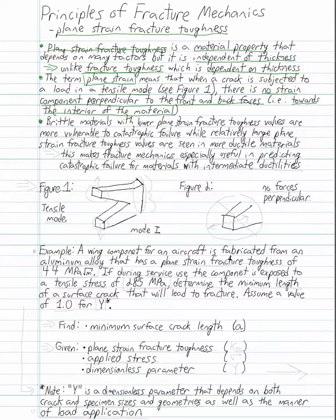Brittle materials with lower plane strain fracture toughness values are more vulnerable to catastrophic failure while relatively large plane strain fracture toughness values are seen in more ductile materials. This makes fracture mechanics especially useful in predicting catastrophic failure for material with intermediate ductilities.